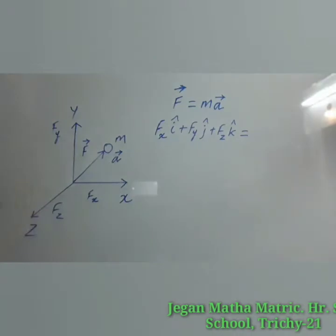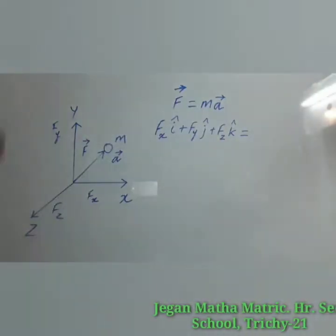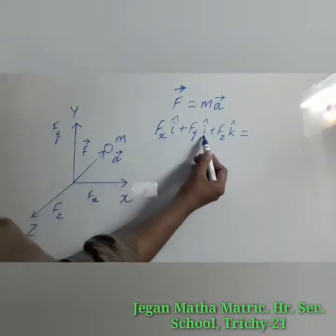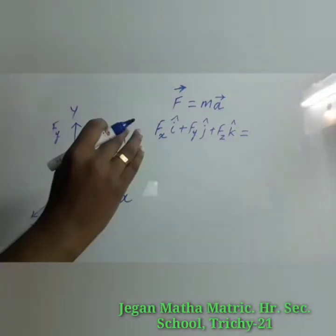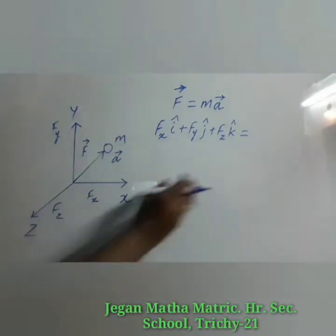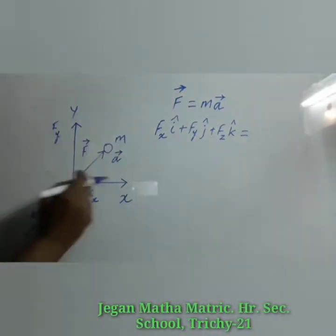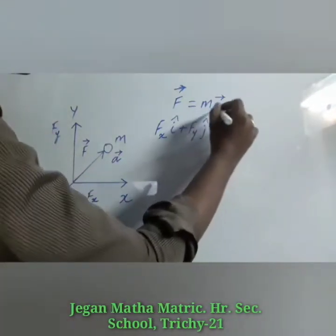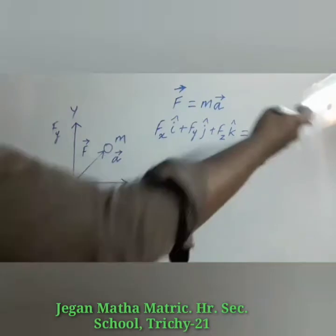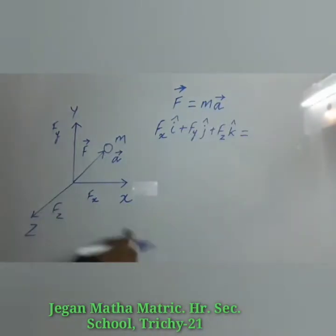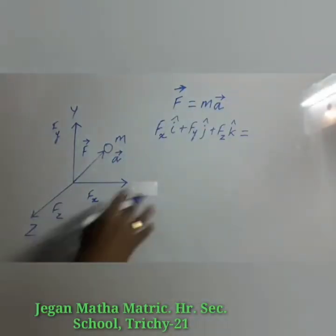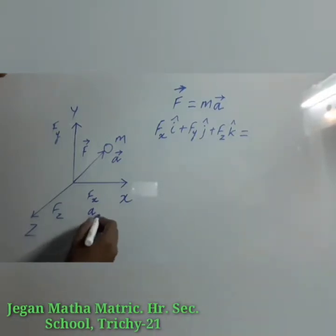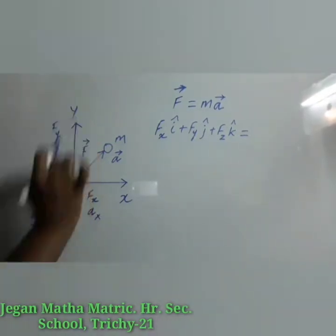Here I have written the components of F vector. We know i-cap, j-cap, and k-cap are the orthogonal unit vectors in the x-axis, y-axis, and z-axis respectively. Likewise, a vector on the right side can be split along the three axes — along the x-axis its acceleration is ax, along the y-axis it is ay.